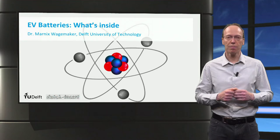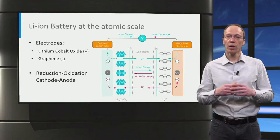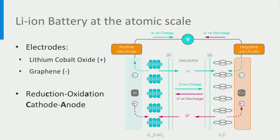Let's consider the atomic scale working of a lithium-ion battery by looking at the classical combination of a graphite negative electrode with a positive lithium cobalt oxide, or LCO, positive electrode as commercialized in 1991. Lithium can be stored between the graphene layers in graphite and in the interlayers of the cobalt oxide host, or short LCO.